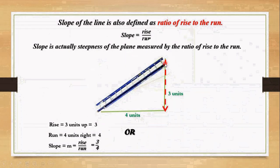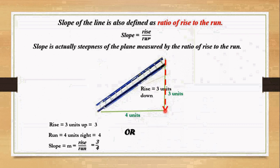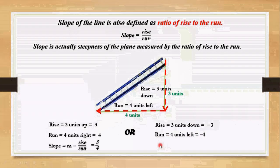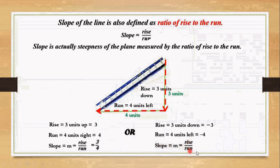It can also be measured starting from the top of the ladder. Rise is 3 units down, which is negative, so rise equals minus 3. The run is 4 units to the left, which is also negative, so run equals minus 4. Using slope equals rise by run, we have minus 3 by minus 4, and on simplifying we have 3 by 4 — the same result.